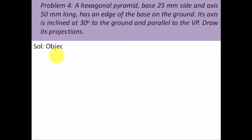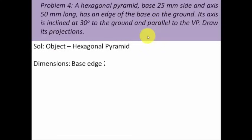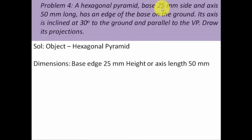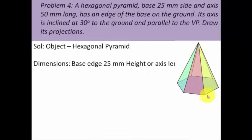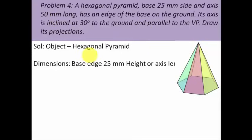Let's write down all the things given in the question. The object is a hexagonal pyramid. The dimensions are: base 25 mm side, so it's going to have six sides each equivalent to 25 millimeters. The axis length has been given as 50 millimeters. So all six sides are 25 millimeters each, the hexagon has a center, and from that center to the apex the height is 50 millimeters.